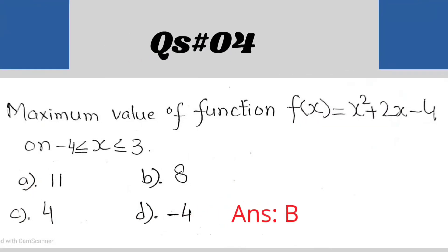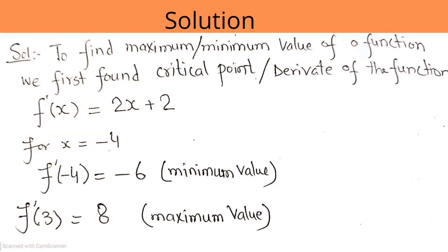Question number 4: maximum value of the function f(x) = x square plus 2x minus 4 on the interval x is greater than or equal to minus 4, less than or equal to 3. Answer is B.